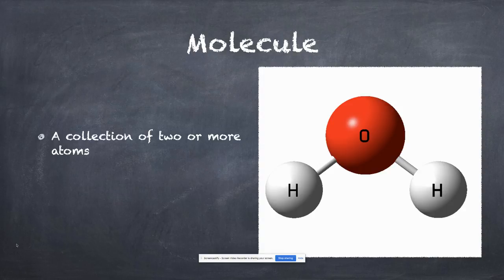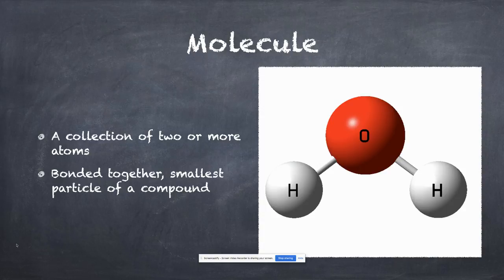A molecule is a collection of two or more atoms. They can be the same or different. This is actually a decent representation of water. Typically molecules are bonded together with covalent bonding. They are the smallest particle that exists of a compound, specifically a covalent compound. Ionic compounds will be treated separately. Feel free to pause the video if you need more time to write.